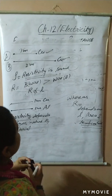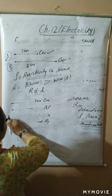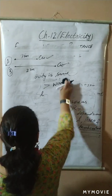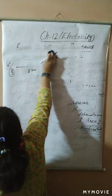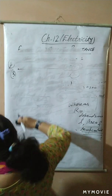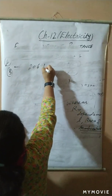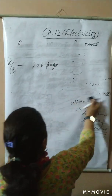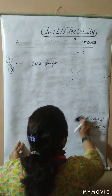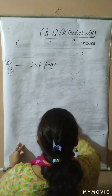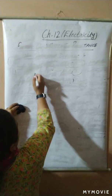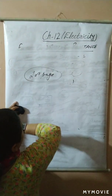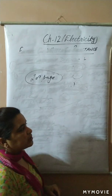For homework, you have to read the activity given in your book on page number 206. Numericals are given on page 209 — you have to solve those for homework. Thank you.